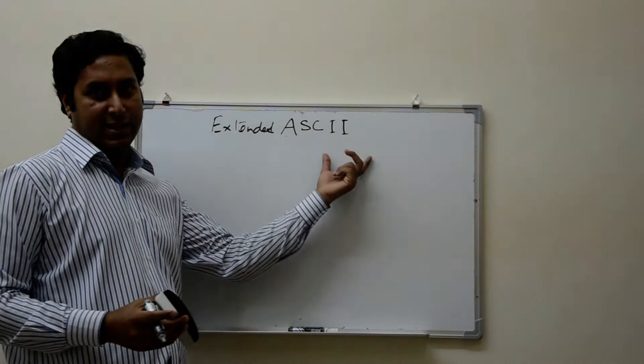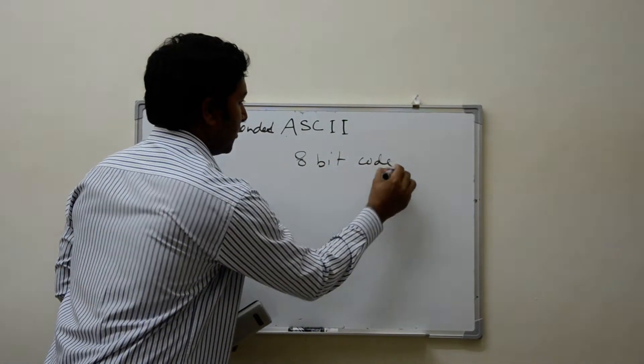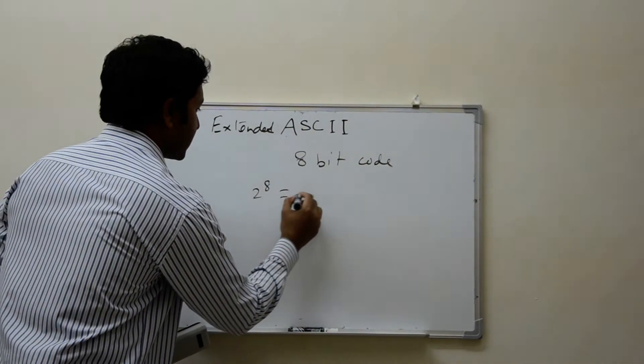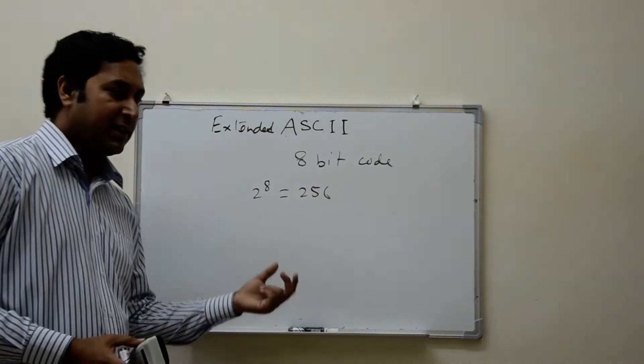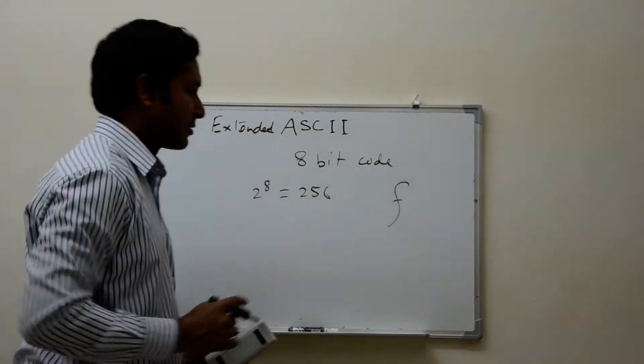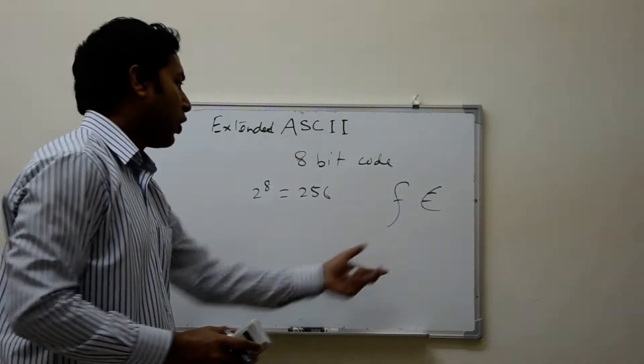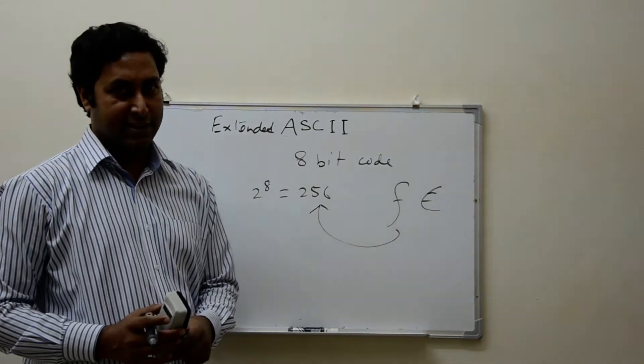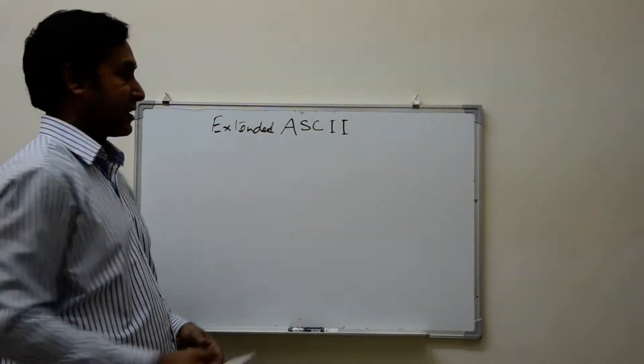Extended ASCII. This extended ASCII is an 8-bit code. 8-bit means 2 to the power 8 is equal to 256 characters can be accommodated. So whatever the other keys, these type of keys, or you may find these keys into your keyboard, these are all belongs to now 256 characters. Hope you have understood ASCII and extended ASCII.